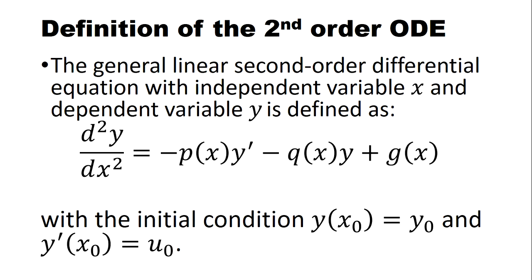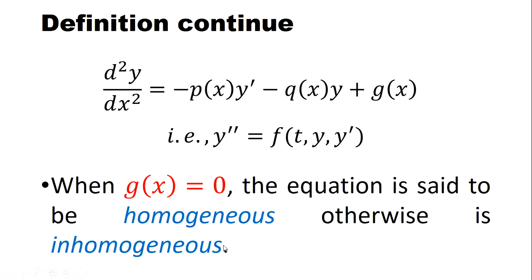In general, the linear second-order differential equation with independent variable X has the second derivative as the subject of the right-hand side function: P(X) times Y prime minus Q(X) times Y plus G(X), with initial conditions Y(X₀) = Y₀ and Y'(X₀) = U₀. If G(X) is zero, the equation is homogeneous; otherwise it is inhomogeneous.